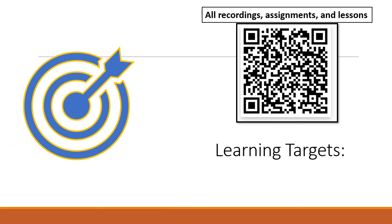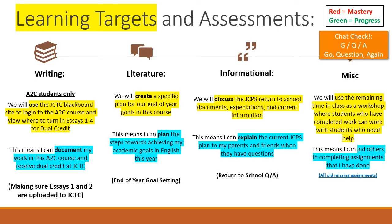Let's take a look at our learning targets. For writing today, we're going to use the JCTC Blackboard site to log into the A2C course and figure out where we can turn in essays one through four for dual credit, so you can document your work and receive dual credit at JCTC. For literature, we're going to create a specific plan for our end-of-year goals. For our informational lesson, we're going to discuss the JCPS return to school documents, expectations, and current information — meaning you could explain the current JCPS plan to your parents and friends if they have questions.